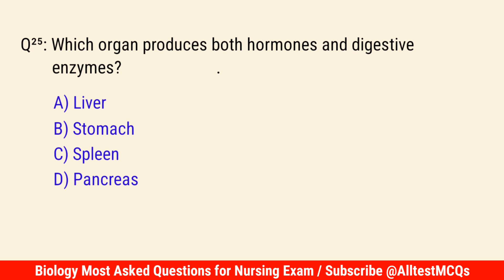Q25. Which organ produces both hormones and digestive enzymes? The correct answer is D: Pancreas.